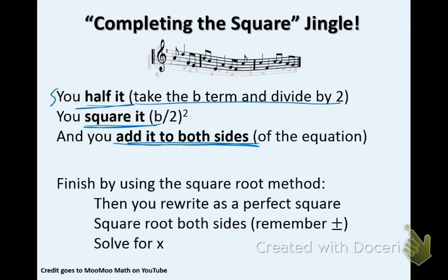Then after you do this part right here, you finish by using the square root method. And you're going to rewrite that value as a perfect square. Then you're going to take the square root of both sides. That is how you undo the square value up there in the exponent. Remember, when you square root something, you must take into consideration the positive and negative answer. And then you solve for x.